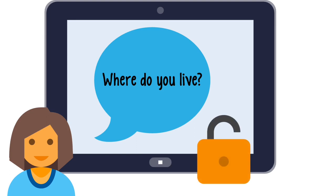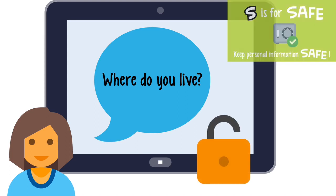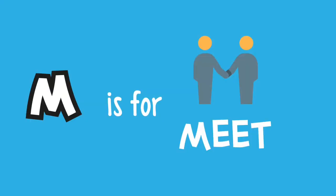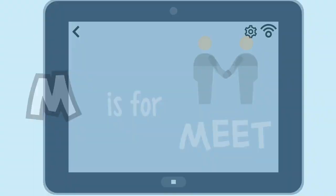Think about this offline situation: you're walking down the road and a stranger comes up to you. They ask for your name, your address, where you go to school. Would you tell them? Of course not. And it's exactly the same online when we're using technology. You'll already know all about this if you watched our last video on the S rule with Tom. If not, you can check it out when this video is finished. So that brings us on to the M rule — and like we said, M is for meet.